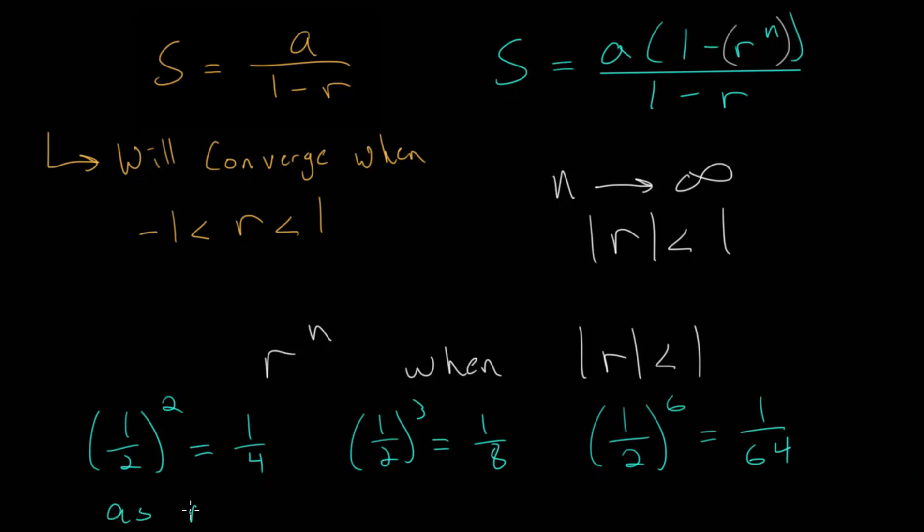So you can see that as n gets bigger and bigger, we can say as n approaches infinity for one-half raised to the nth power, that this is going to approach zero. Since we can see that pattern. As we raise a fraction to higher and higher exponents, the value gets smaller and smaller.